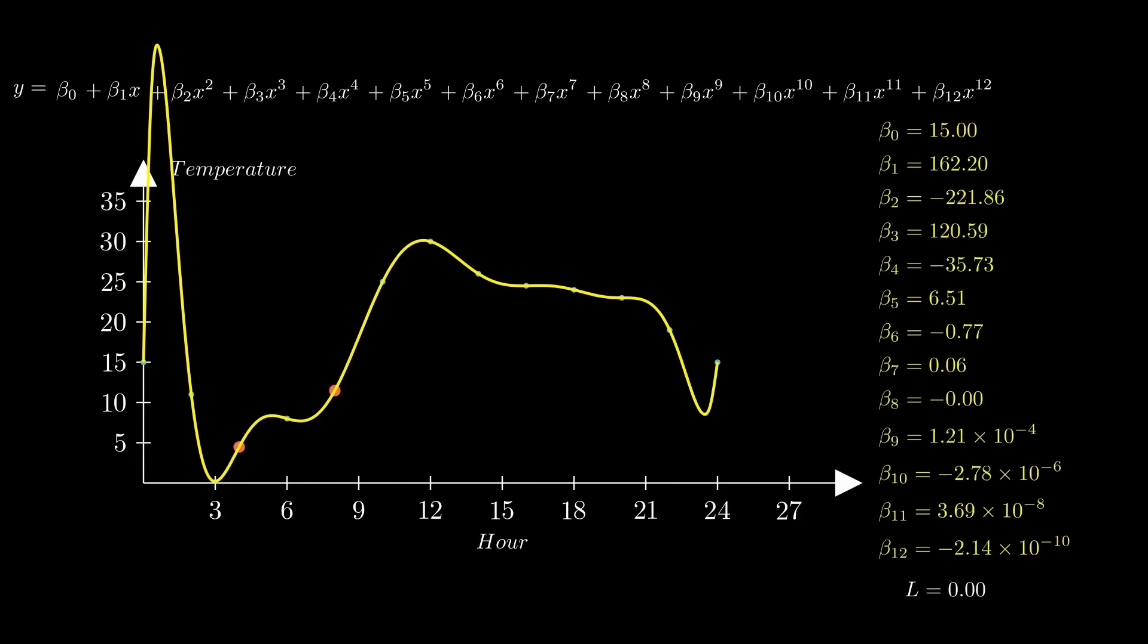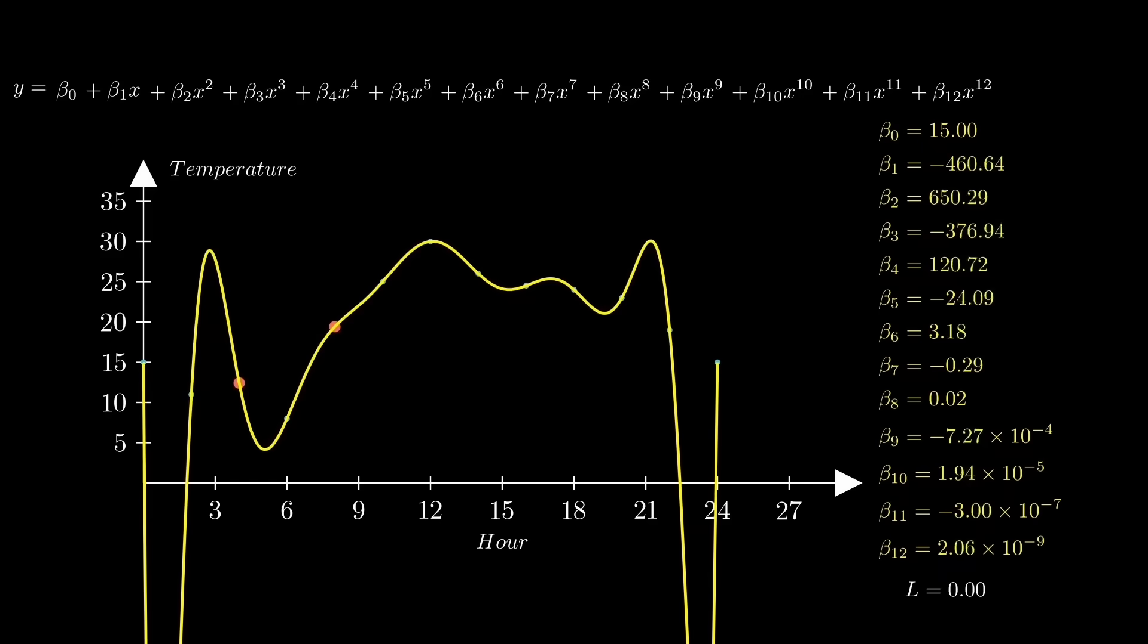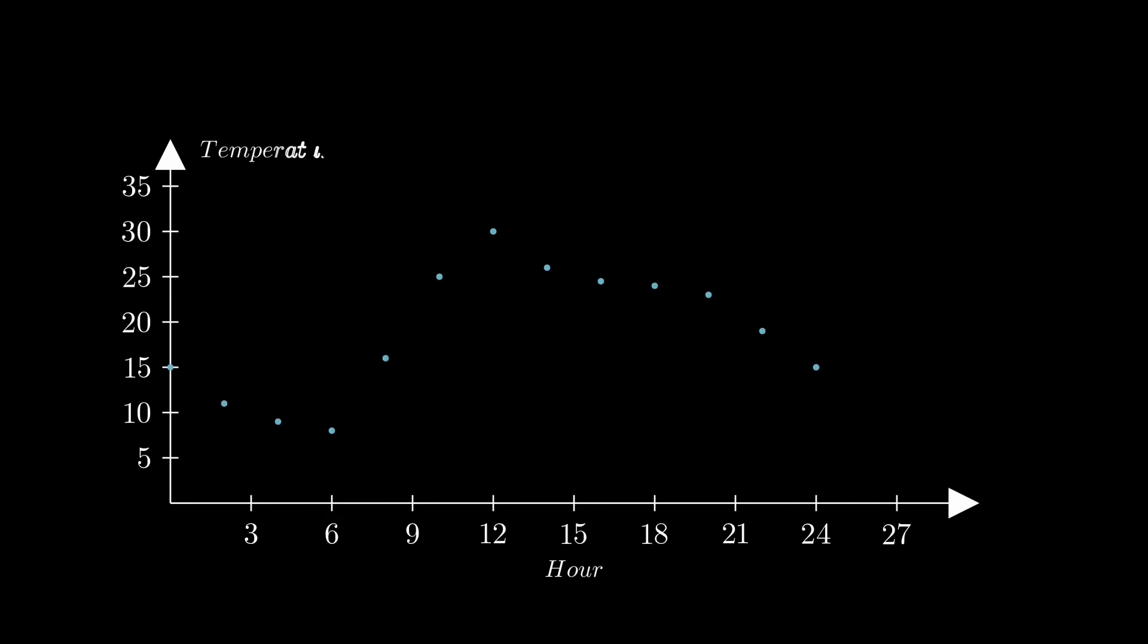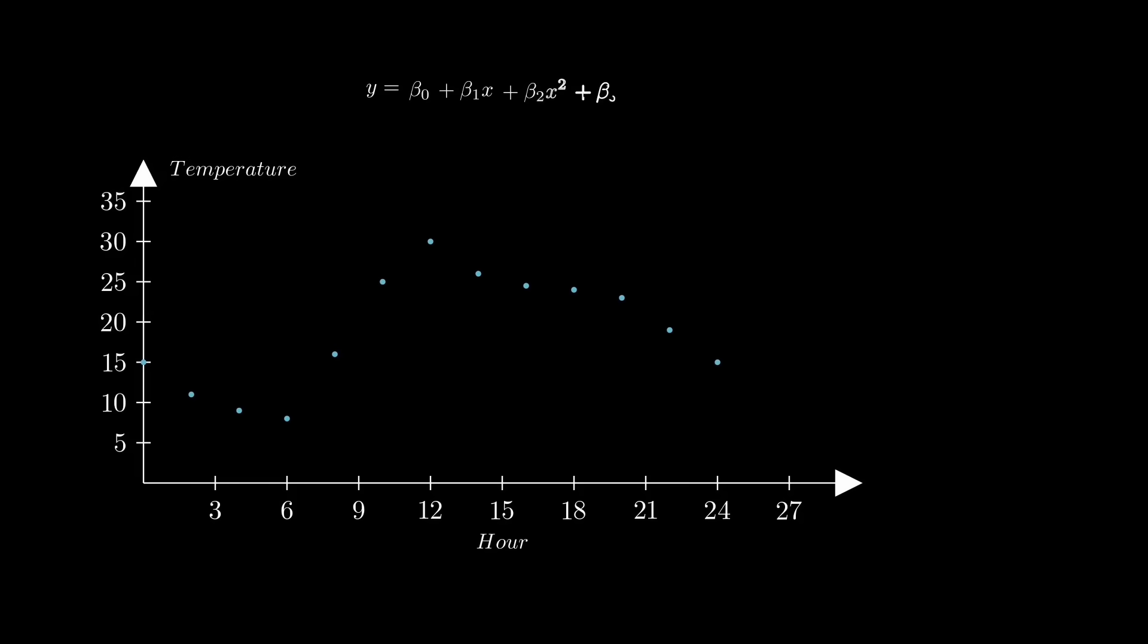The model is overly sensitive to noise. If we slightly adjust two data points, you can see the shape of the curve changing drastically. On the other hand, if we use a much simpler cubic polynomial, the shape doesn't change much when we move the data points around.